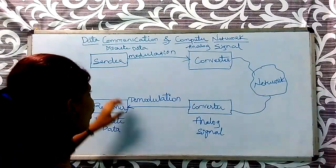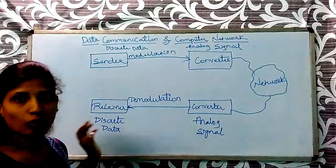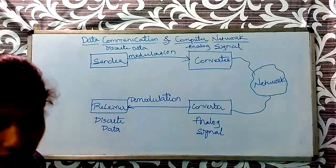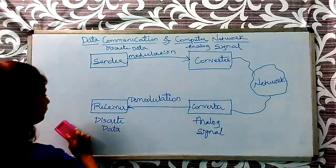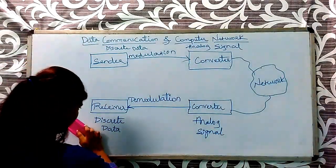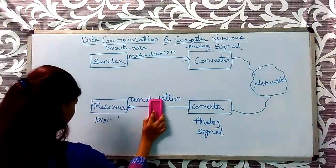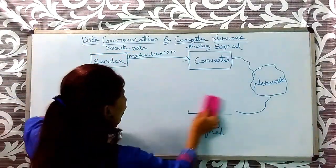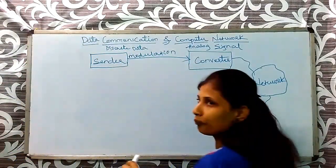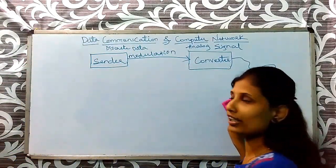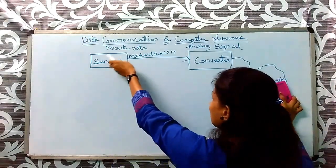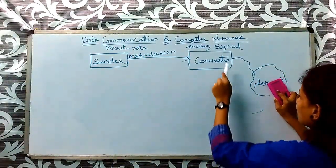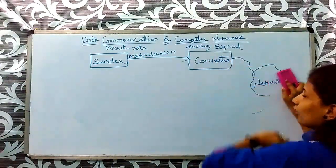These are the five components of data communication — sender, converter, network, converter, and receiver. Discrete data means values that are not in a continuous process. Analog signal means values that are in a continuous process.